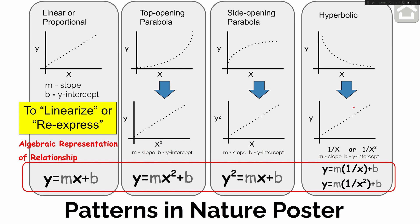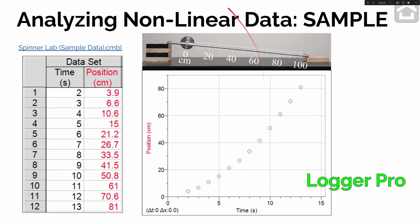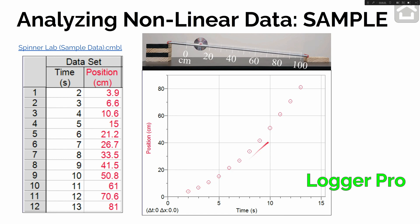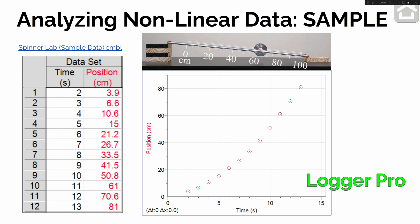Let me show you one example with actual data collected in this class. Going back to the spinner lab, we had an object moving down an incline and increasing in speed, and we measured at specific times what the position of the spinner was — for example, at 2 seconds, position was 3.9 centimeters. When we graphed position versus time, we got a top-opening parabola, because the slope was getting steeper and steeper as time went on. In the lab we used the position versus time graph to get velocities at specific times, and ultimately graphed velocity versus time, where the slope was the acceleration.